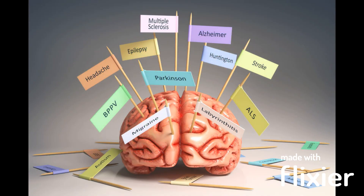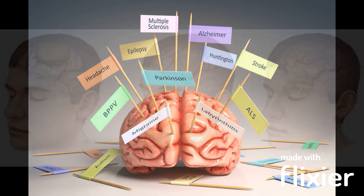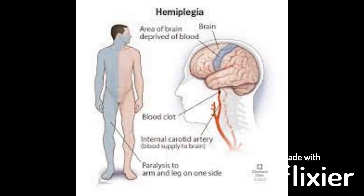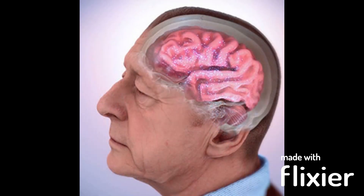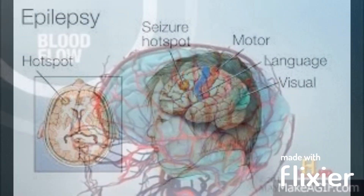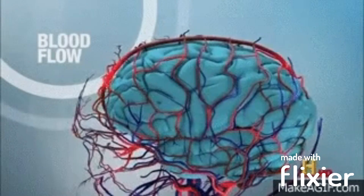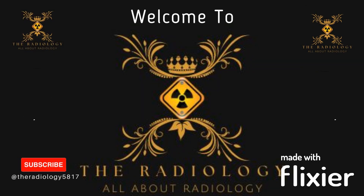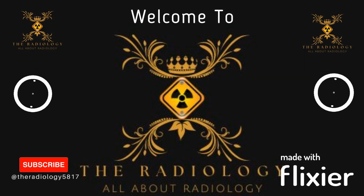نیوکلیر برین سکین کا استعمال دماغ کی مختلف بیماریوں کو ڈائگنوز کرنے کے لیے کیا جا سکتا ہے، جیسے ٹیومر، فالج، الزائیمر ڈیزیز اور مرگی (اپیلیپسی)۔ اس کا استعمال دماغ میں خون کے بہاؤ کا جائزہ لینے اور بعض علاج کے اثرات کا جائزہ لینے کے لیے بھی کیا جا سکتا ہے۔